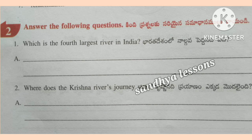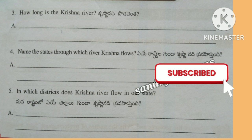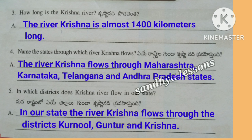Second, answer the following questions. First question: Which is the fourth largest river in India? The fourth largest river in India is the river Krishna. Second question: Where does the Krishna river's journey start? The river Krishna starts its journey from Mahabaleshwar in the western ghats of Maharashtra. Third question: How long is the Krishna river? The river Krishna is almost 1400 km long.